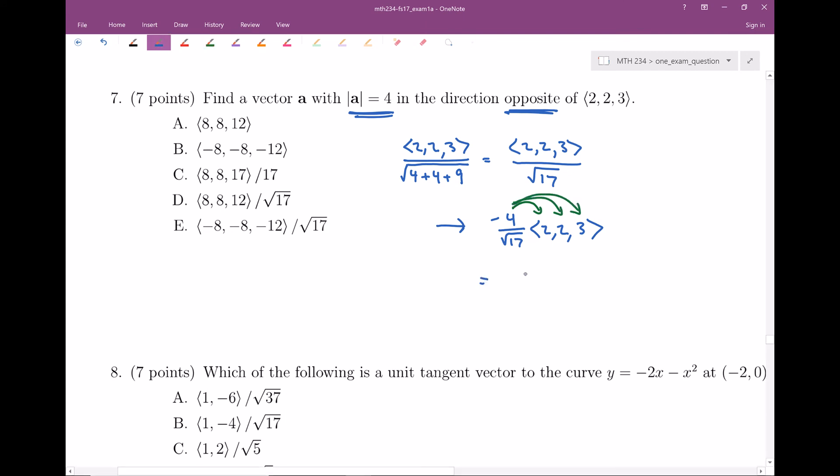So when I distribute that, I get <-8, -8, -12> divided by √17.